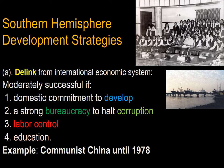Additional conditions for successful delinking include labor control — restraining unions so that profits are redirected by the state to other investments rather than increasing worker wages, which may persist for a generation — and a strong focus on education. This is what Communist China did until 1978, when Deng Xiaoping opened up China for selective business.